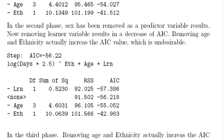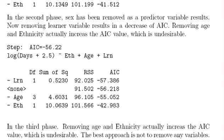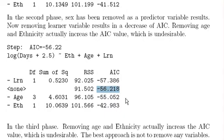In the second phase, sex has been removed. The current AIC is -56.218. Now we look at what happens if we remove the LRN variable. It turns out that removing LRN would further decrease the AIC, while removing age or ethnicity would increase it. So LRN is also removed.